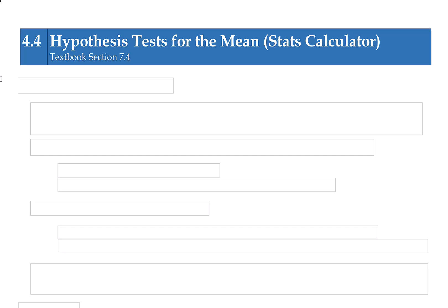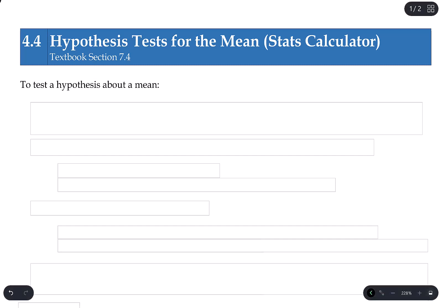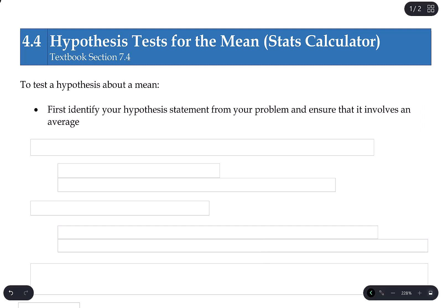Let's look at some examples of how to actually perform hypothesis tests for the mean, using the stats calculator to compute the p-values. To test a hypothesis about a mean, the first thing that's really important is knowing what you're supposed to do. Identify the hypothesis statement in the problem and ensure that it involves something about an average or a mean.